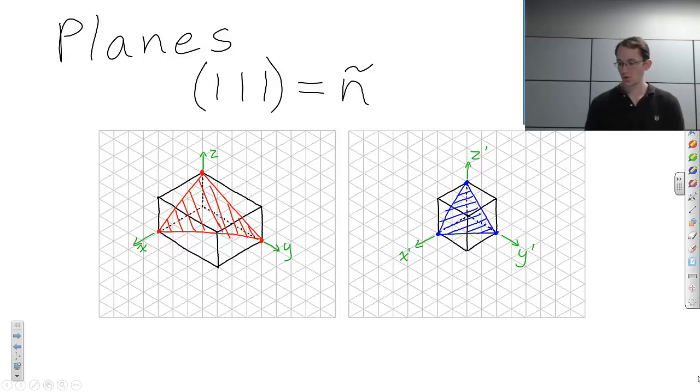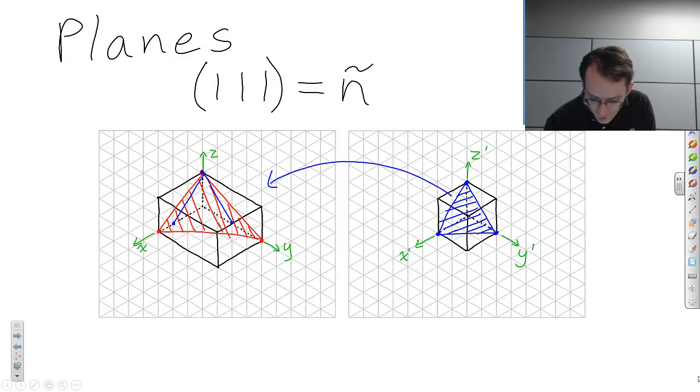To show you, if we take this blue plane and kind of superimpose it onto here, it would go between here, here, and here. So, even though we have the same math, it's the (1 1 1) plane in both crystal systems, because they are different, because the edges of the unit cell are different, they will actually have different normal vectors if we look at it in a Cartesian coordinate system. But, in the crystal system, those vectors are exactly the same.